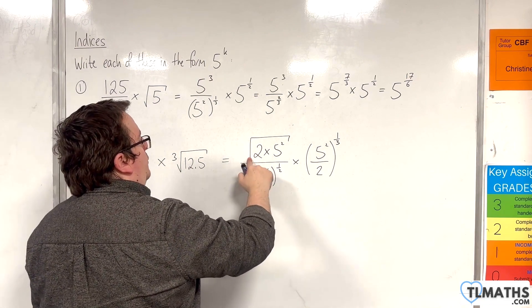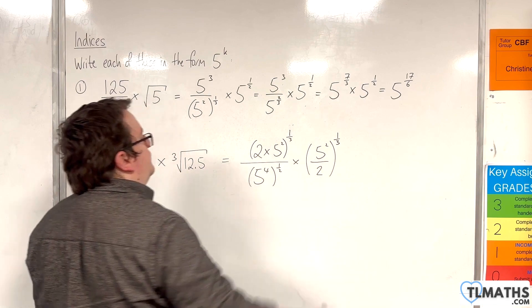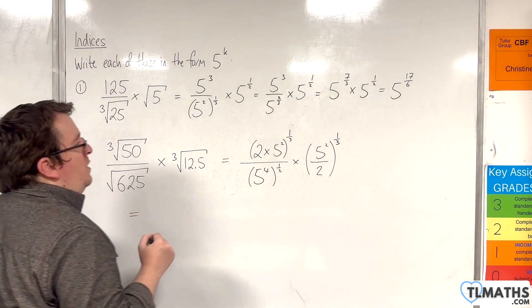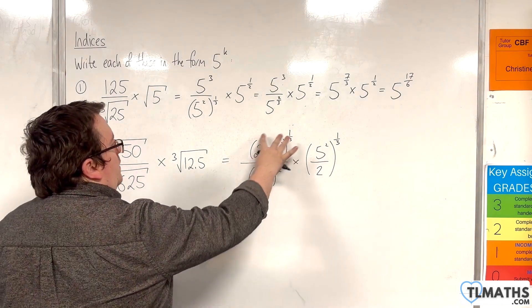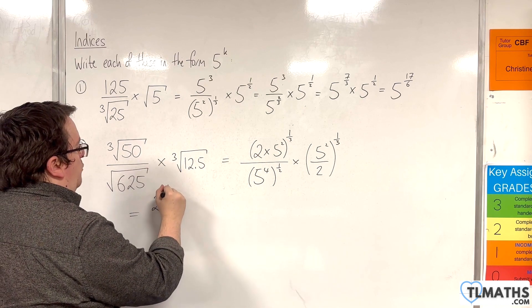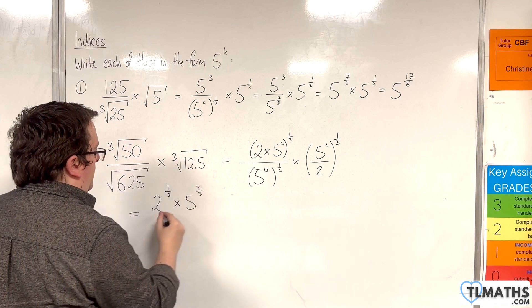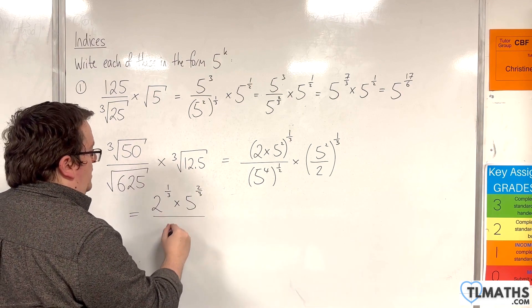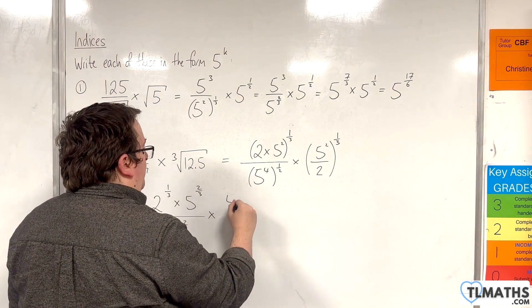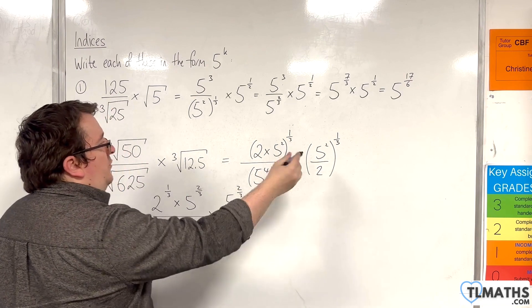In fact I'll get rid of the cube root there and I'll write that as the power of a third as well. So what you might be able to see here is that when I expand that bracket out, I'm going to have 2 to the power of 1 third times by 5 to the power of 2 thirds over 5 to the power of 2 times by, now this is 5 to the power of 2 thirds over 2 to the power of a third.